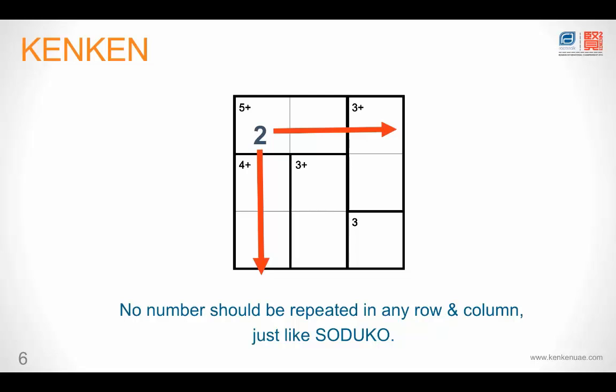So in this example, we have used 2 in the top left box. We cannot repeat 2 again in the same row or the same column. Anywhere else in the puzzle, you can write 2. So diagonally, you can write 2. So these are the two very simple rules of KenKen Puzzles.